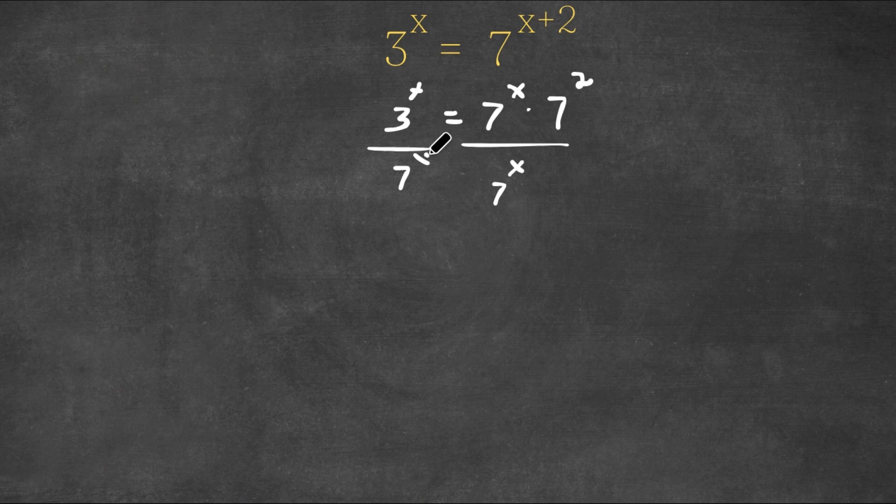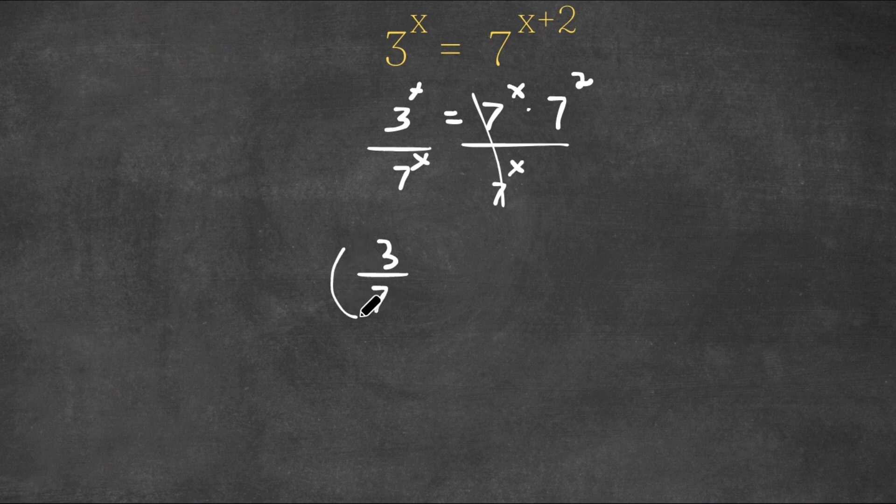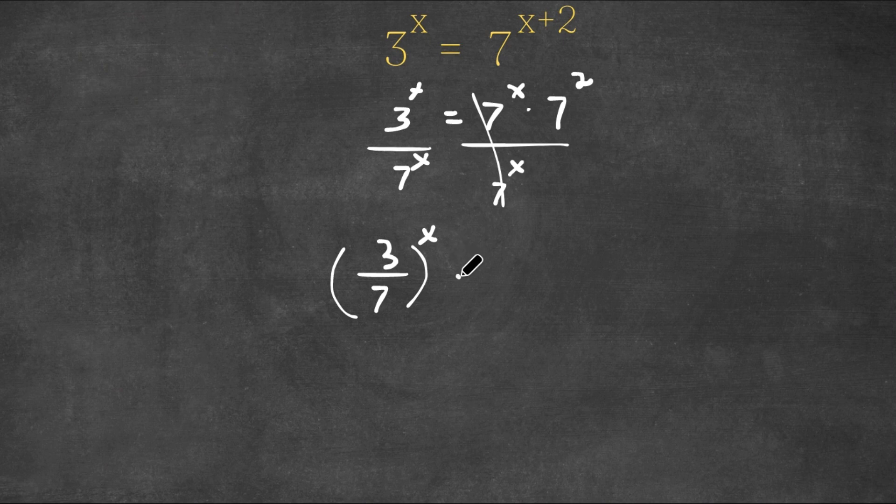So now these two cancel out and I'm left with 3 over 7 to the power of x is equal to 7 squared, which is 49.